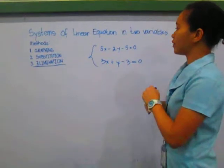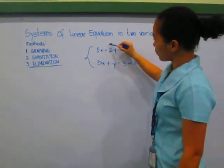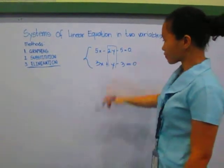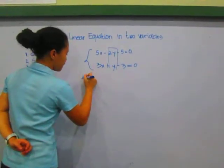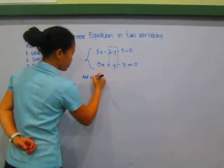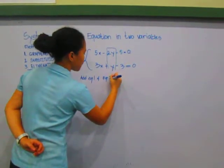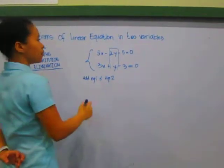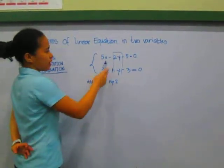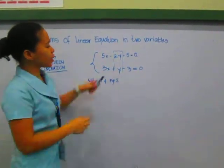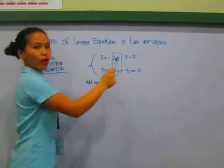First, we have to eliminate a variable. I choose variable y for my elimination. We have to add equation 1 and equation 2. Since they are opposite in sign, we just need to find a number that would equal them to 0.